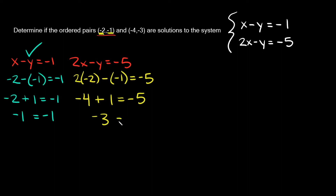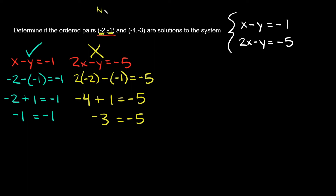So we have negative 3 is equal to negative 5. Is this a true statement? No, that's a false statement. So is negative 2, negative 1 a solution to this system? No, it is not. So negative 2, negative 1 is not a solution.